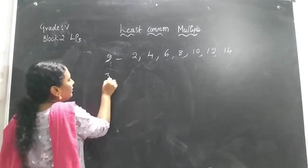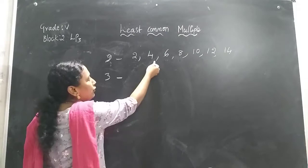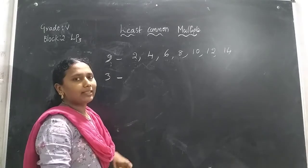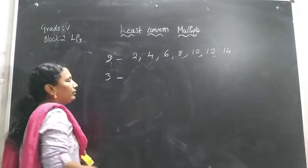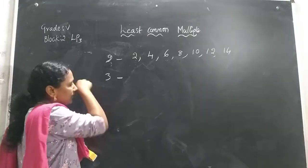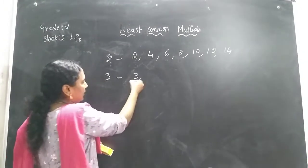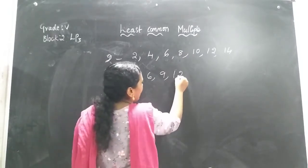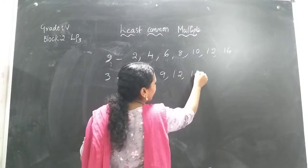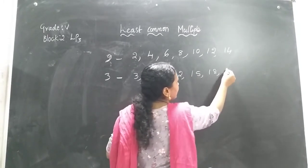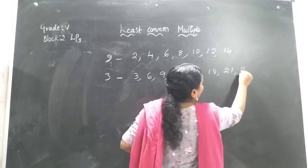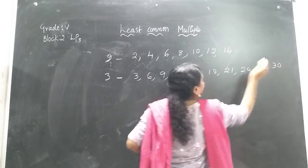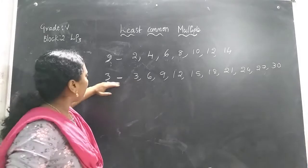We will write the multiples for the number 3. 3 ones are 3, 3 twos are 6, 3 threes are 9, 3 fours are 12, 3 fives are 15, 3 sixes are 18, 3 sevens are 21, 3 eights are 24, 3 nines are 27, and 3 tens are 30. These are 10 multiples for the number 3.